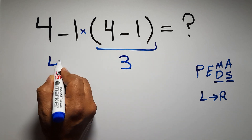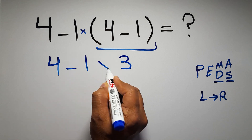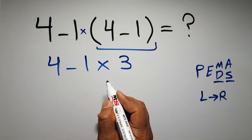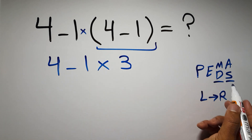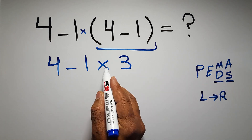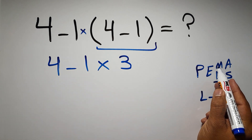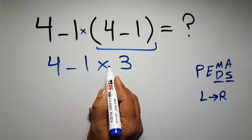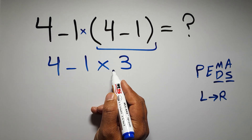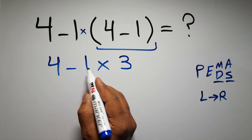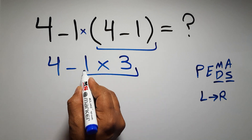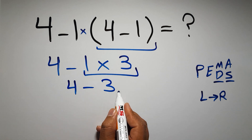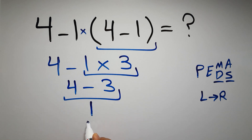So four minus one times three. Now we have one subtraction and one multiplication. According to PEMDAS, multiplication has higher priority than subtraction because multiplication comes before subtraction. So first we do the multiplication: one times three gives us three. Then four minus three equals one, and this is our final answer.